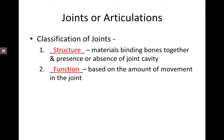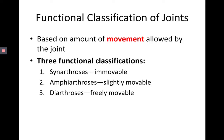Functional classification of joints is all about movement, and you have three options: synarthroses, amphiarthroses, and diarthroses. Synarthroses is an immovable joint, amphiarthroses is a slightly movable joint, and diarthroses is a freely movable joint.